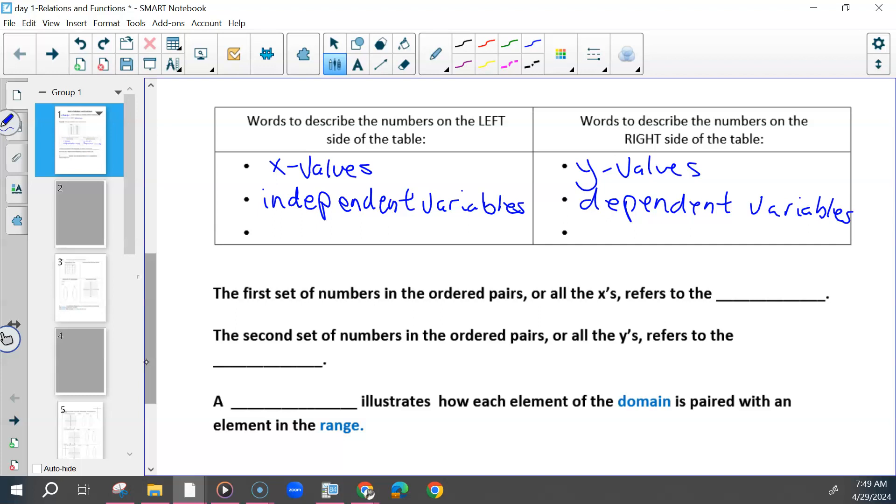The first set of numbers in the ordered pairs, or all of the X's, refers to the domain. We've talked about that previously, but now we're putting it to a different context.